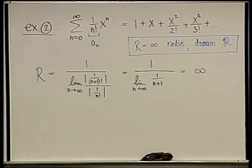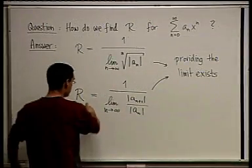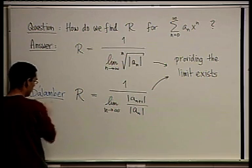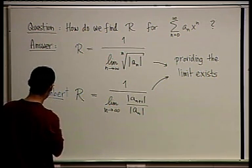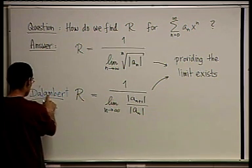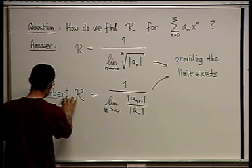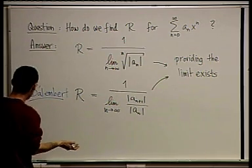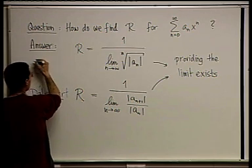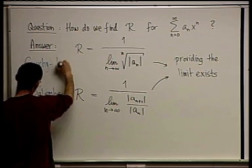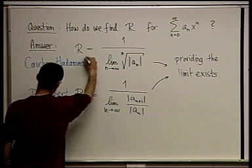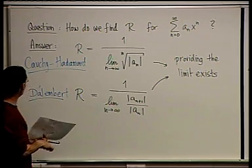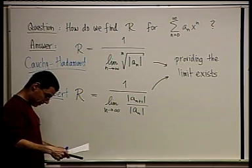The first formula is attributed to Cauchy-Hadamard (the root-based one), and the second to D'Alembert (the ratio-based one). Cauchy we've encountered before. These are the two ways we have of finding r, and we've seen examples of using both.